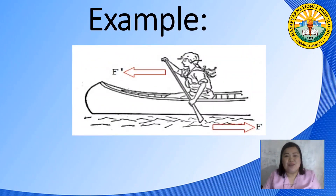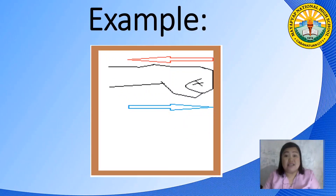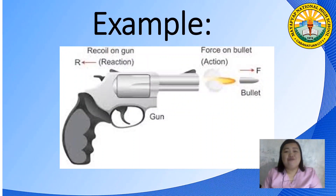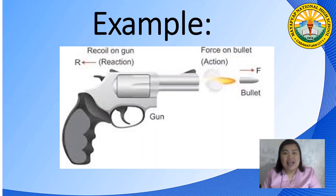For our next example, while rowing a boat, when you want to move forward, you paddle by pushing the water back, causing the boat to move forward. Our next example: you hit the wall with a force, and that exact same amount of force is returned by the wall. And for our last example, the gun and the bullet — when the gun is fired, it exerts a forward force on the bullet, and the bullet exerts an equal and opposite reaction force on the gun.